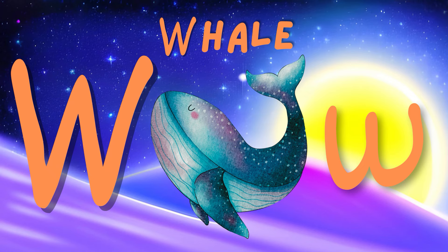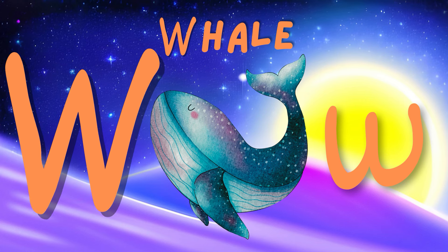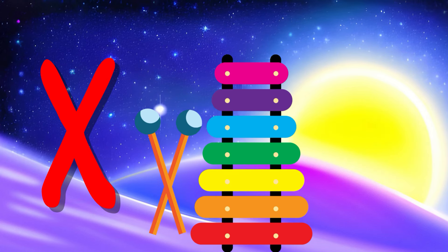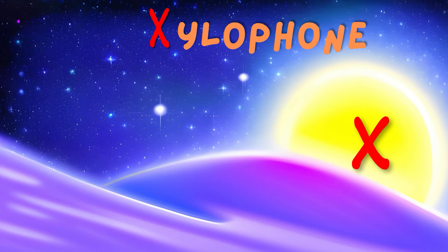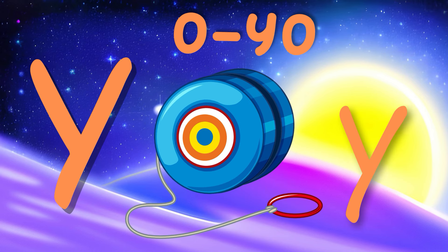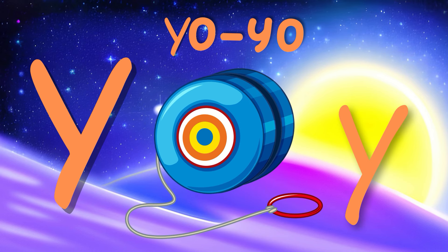U is for Umbrella. Umbrella, umbrella. This is an Umbrella. Umbrella, umbrella. V is for Violet. Violent, violent. This is a Violet. W is for Whale. Whale, whale. This is a Whale. Whale, whale.